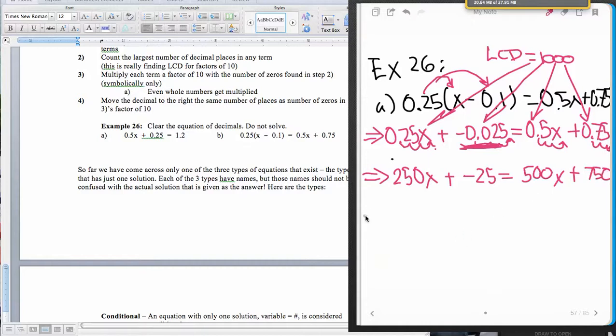Now I'm ready to solve this. There are no decimals left. So I'm going to move the variables to one side. So the 250 is going to go over here because 500 is larger. So minus 250x and minus 250x. And that's going to give me that a negative 25 is equal to 250x plus 750.